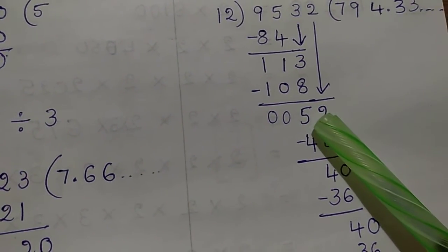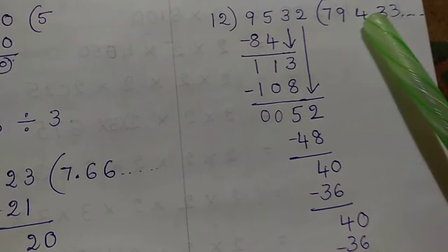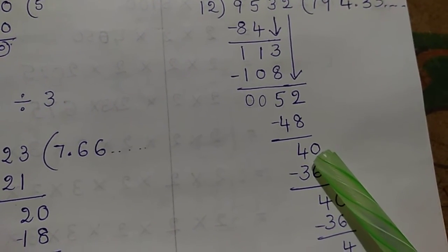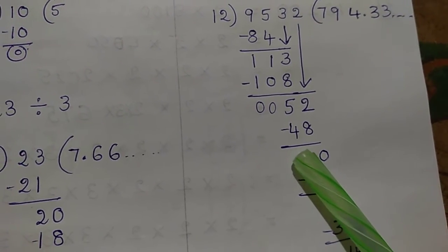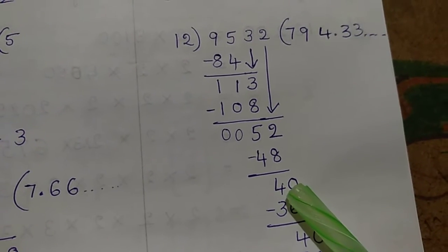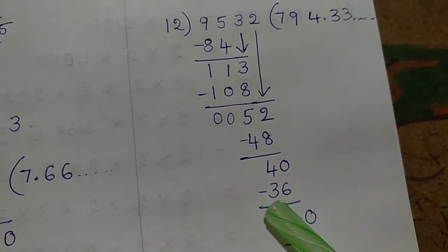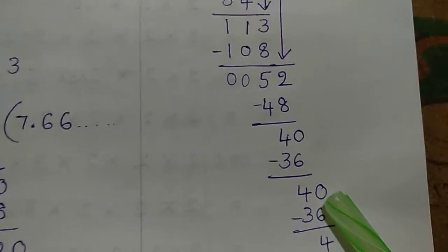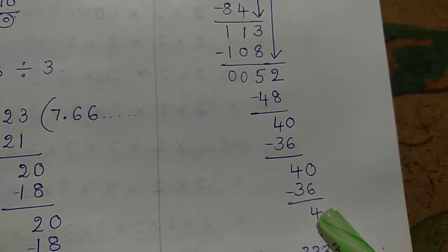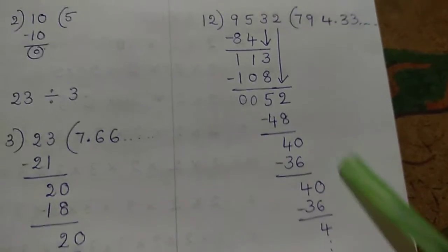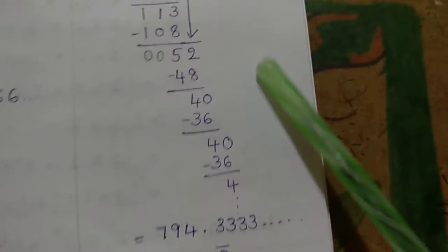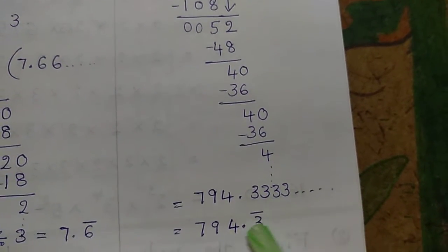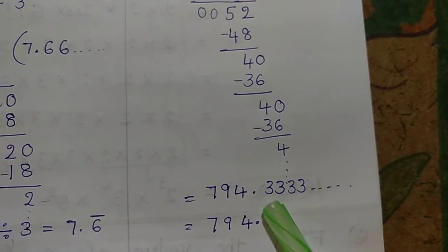We have 2. We will write that 2. Now we are going to write 52. 12 times 4 is 48. 12 times 5 means 60. So 12 times 4 is 48. 52 minus 48 gives 4. Once there is a point, we have here 0.4. 40 minus 36 gives 4. That means the number 4 will be repeated. So the answer is 794.3333, meaning 794.3 bar.